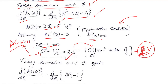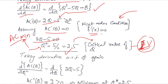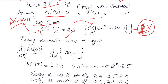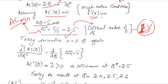The critical value is the value of the independent variable at which the dependent variable will be optimized. Now we need to find out if we are actually at a maximum or a minimum, so we take the second order derivative, which gives us a value equal to 2.